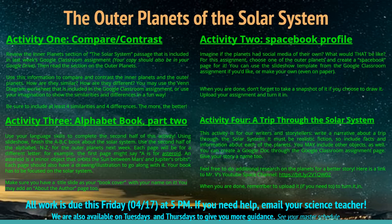Activity 4: A Trip Through the Solar System. This activity is for our writers and storytellers. Write a narrative about a trip through the solar system. It must be realistic fiction, so include facts and information about each of the planets. You may include other objects as well, such as asteroids, moons, comets, dwarf planets, and meteors. You can create a Google Doc through the Google Classroom Assignment page. Give your story a name too. Feel free to do additional research on the planets for a better story — here is a link to Mr. V's YouTube Space channel. When you are done, remember to upload it to turn it in.